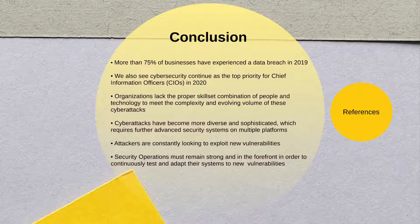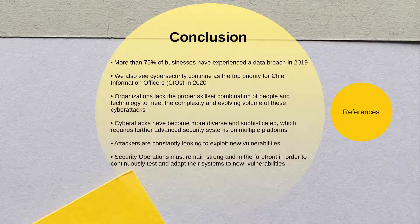In conclusion, a data breach can occur at any time. Over 75% of businesses experienced a breach in 2019. Cybersecurity continues to be a top priority for chief information officers. Most organizations lack the proper skill set combination of people and technology required to meet the complexity and evolving volume of these cyber attacks. They have become more diverse and sophisticated, which requires further advanced security systems on multiple platforms. Attackers are constantly looking to exploit new vulnerabilities. Investing in security solutions that can have visibility across networks and their perimeter is paramount. Security operations must continuously test and adapt their systems to new vulnerabilities.